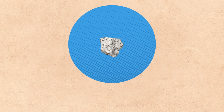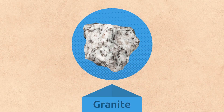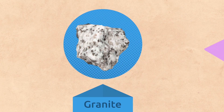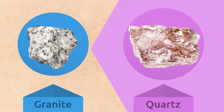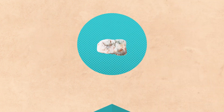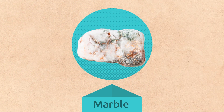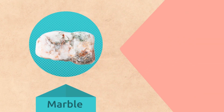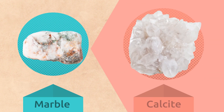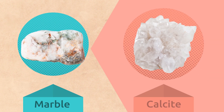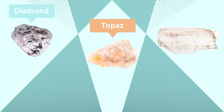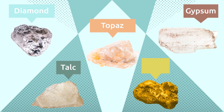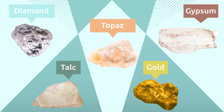There are many types of minerals. Granite, for example, is a rock made up of a mineral called quartz. Marble is another rock made up of a mineral called calcite. Some well-known minerals are diamonds, topazes, gypsum, talc, and gold.